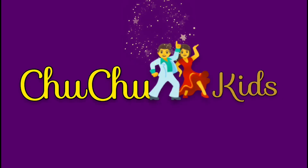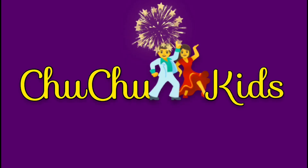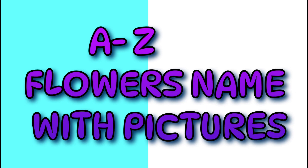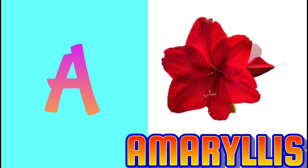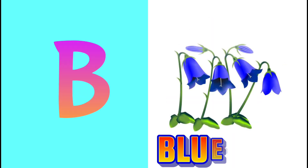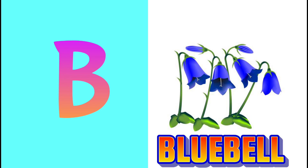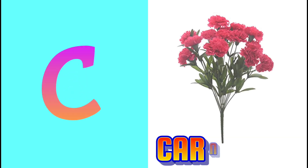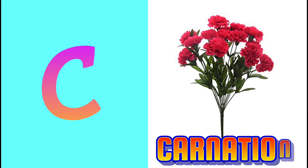Choo Choo Kids A to Z flowers name with pictures. A for Aster, B for Bluebell, C for Carnation.